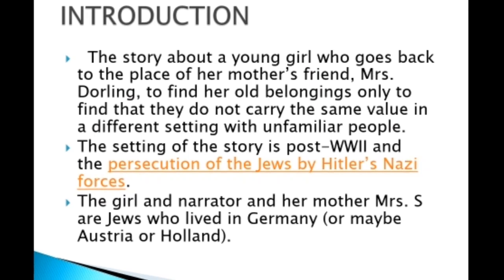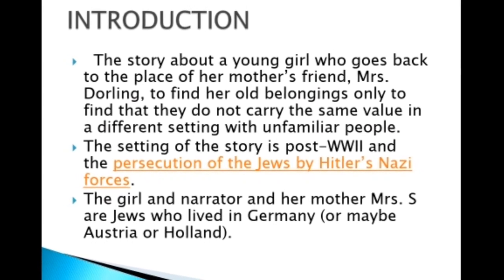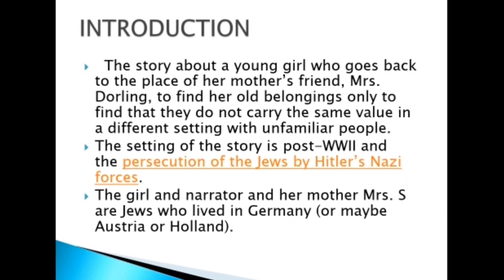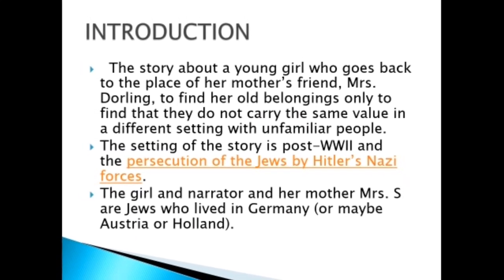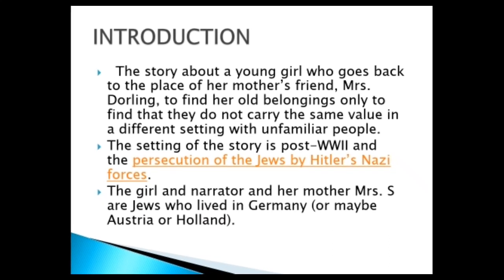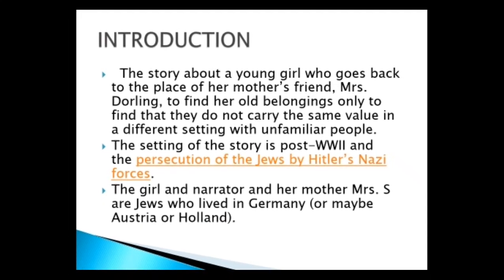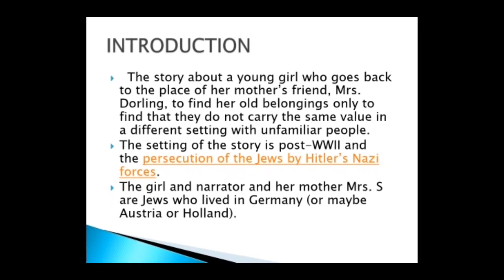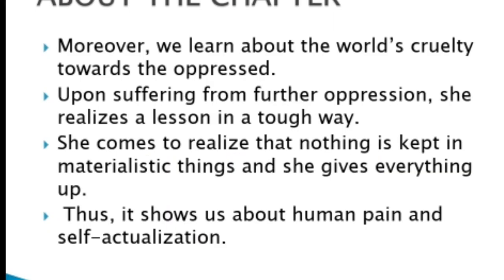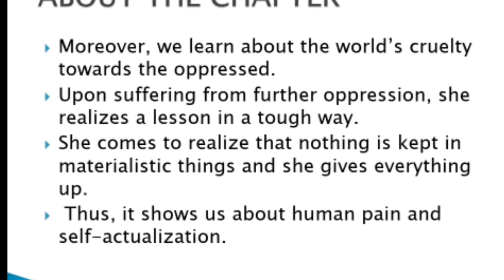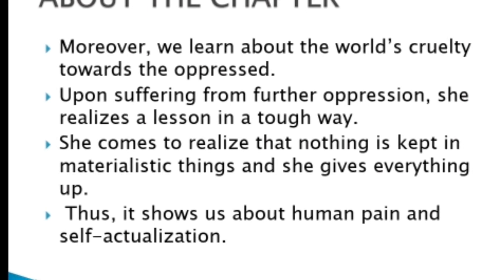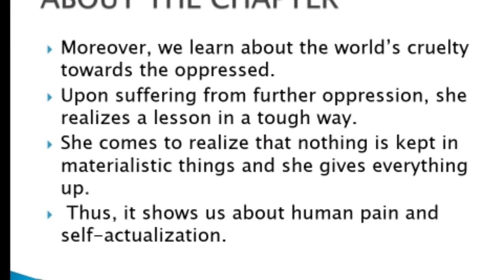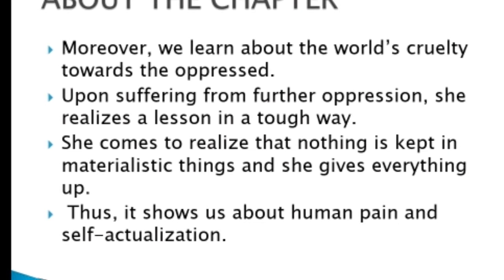This chapter is about a girl — the narrator herself. She decides to visit the address given to her by her mother, where all her family's precious possessions were kept safely by Mrs. Dorling. Mrs. Dorling was their neighbor at that time, but after the World War, the narrator and her mother, Mrs. H., had to leave the place. The first time the narrator visited the address, Mrs. Dorling behaved in the most absurd manner.